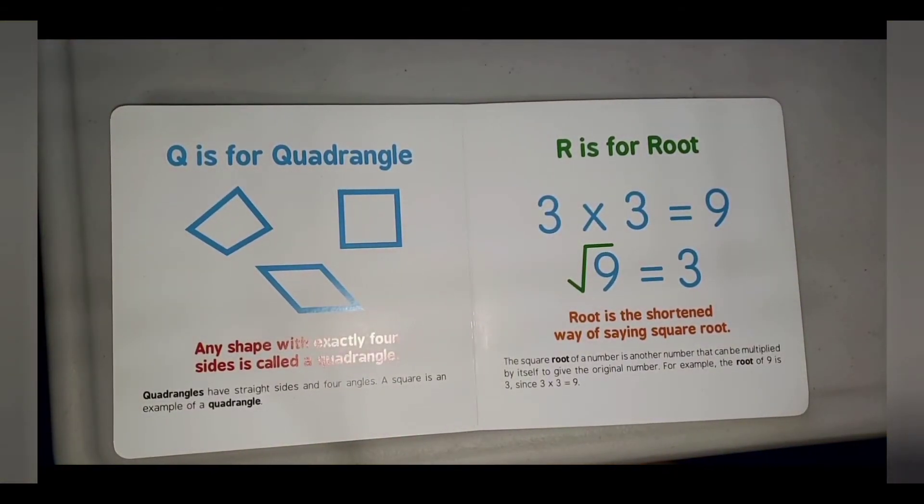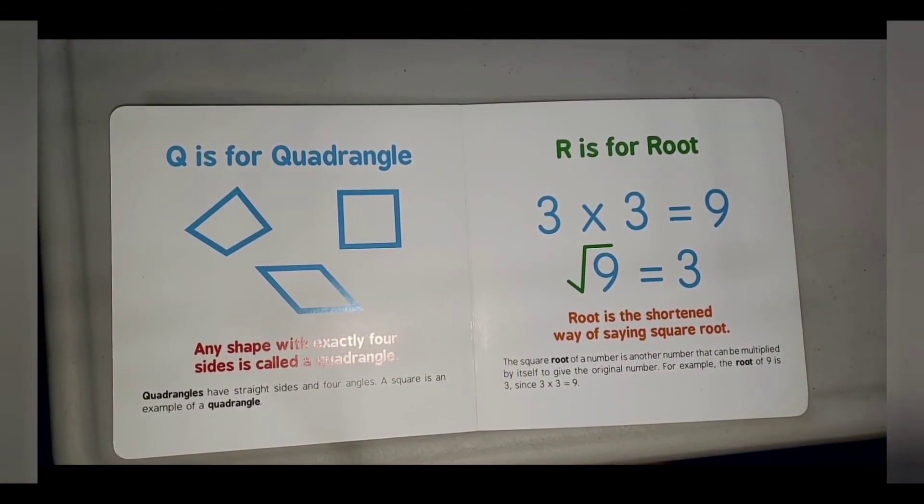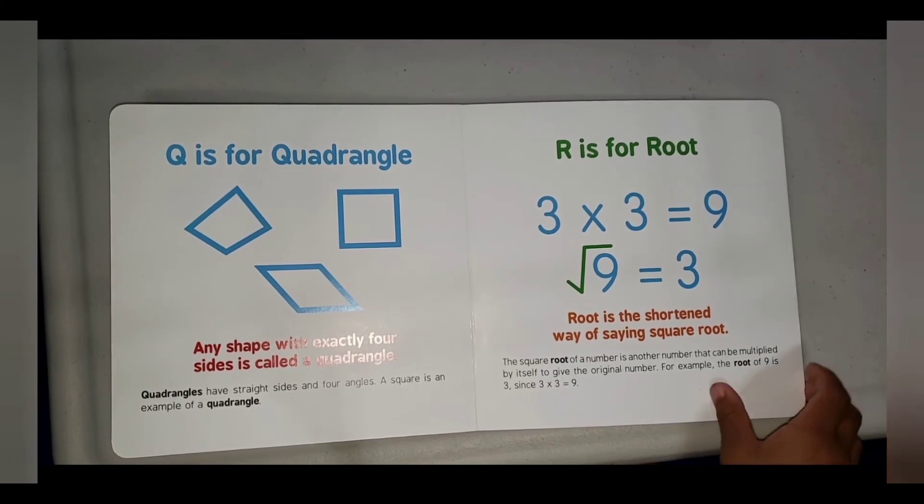R is for Root. Root is the shortened way of saying square root. The square root of a number is another number that can be multiplied by itself to get the original number. For example, the root of 9 is 3, since 3 times 3 equals 9.